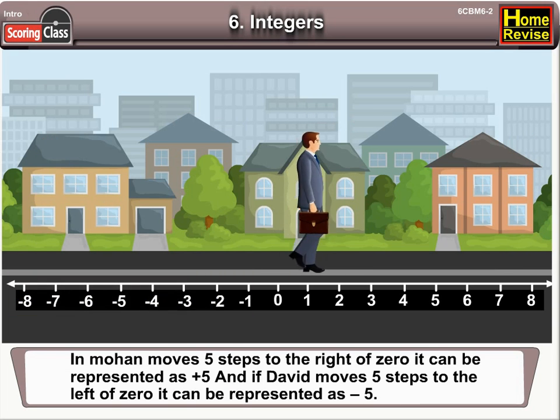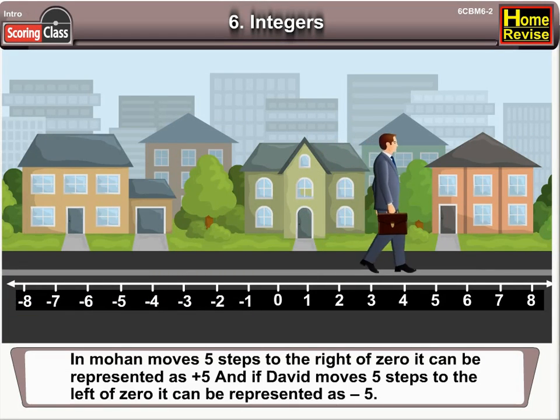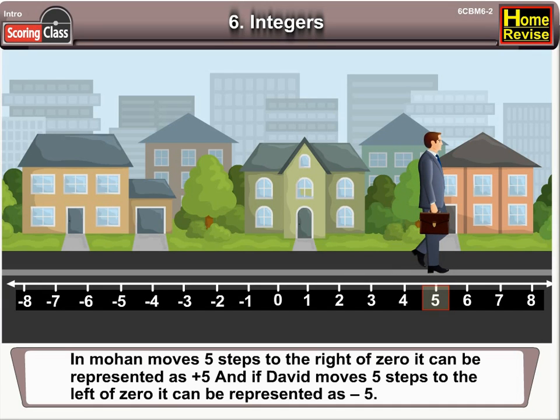If Mohan moves 5 steps to the right of 0, it can be represented as plus 5. And if David moves 5 steps to the left of 0, it can be represented as minus 5.